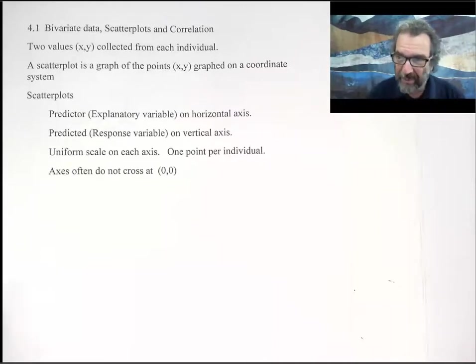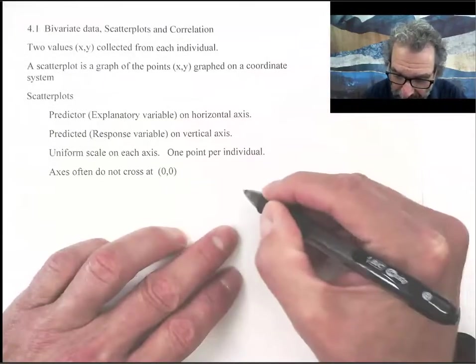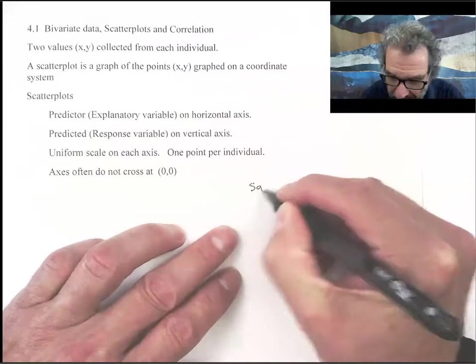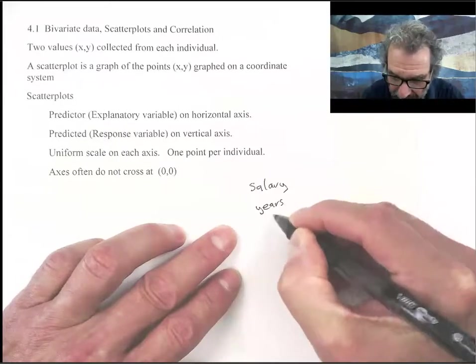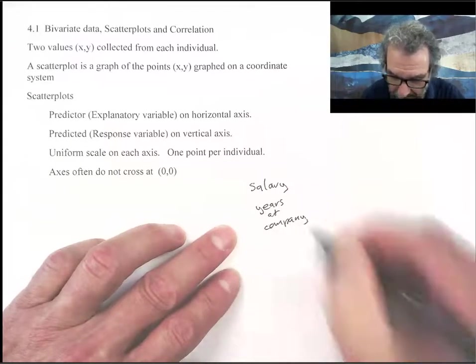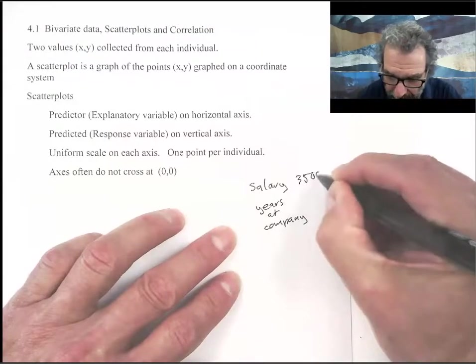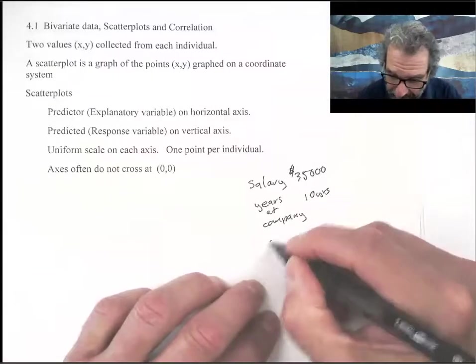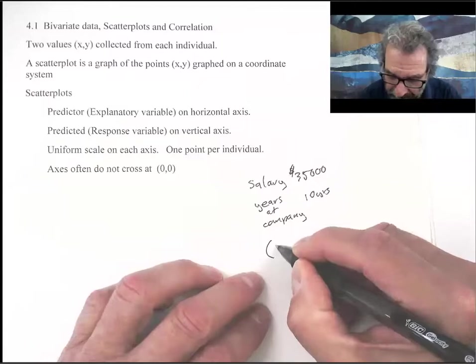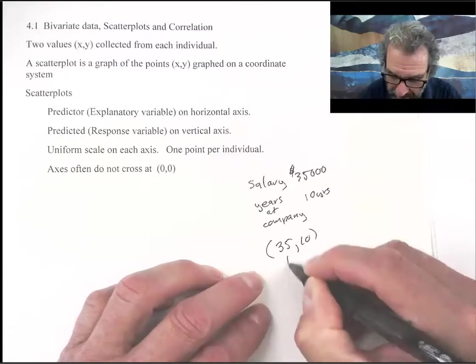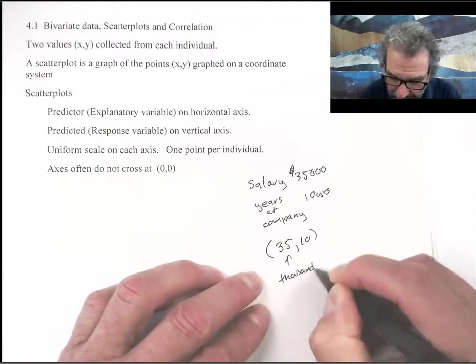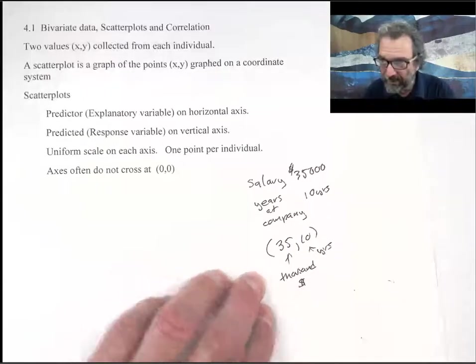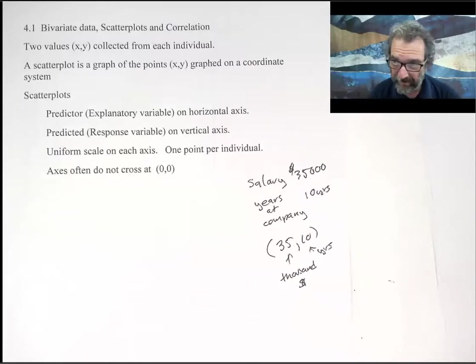You might be collecting information like maybe from a company salary and years at the company. So maybe the salary is $35,000, maybe the years is 10 years. So we have a pair of values, a pair of numbers that go together. We could collect a lot of that information from the employees. What's your salary? How many years have you been at the company? And we want to examine that data by making a scatterplot.